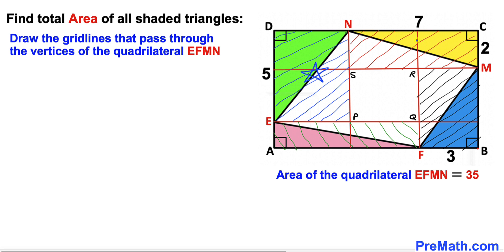As a result we get four rectangles: the first one, second one, third one, and fourth one. I'm going to make the first rectangle completely green, the second completely yellow, the third completely blue, and the fourth completely pink.